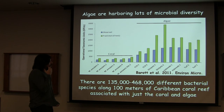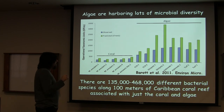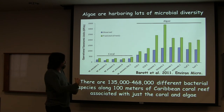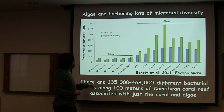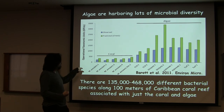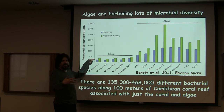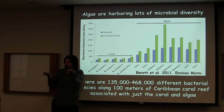The other idea, from Katie's work, is she was looking at coral-algal competition. These are Montastraea 16S data. What you see is that corals have, based on 16S, roughly 100 to 200 unique microbes per coral species.